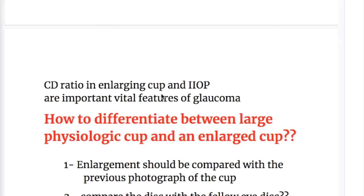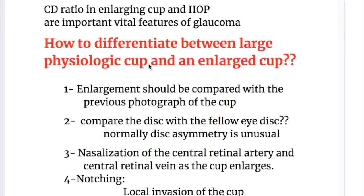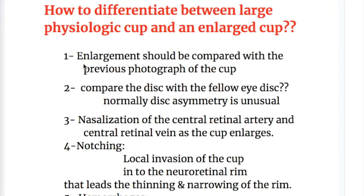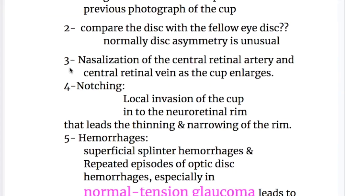CD ratio in an enlarging cup and increased intraocular pressure are important vital features of glaucoma. How to differentiate between a large physiologic cup and an enlarged cup? Number one, enlargement should be compared with previous photographs of the cup if available. Number two, compare the disc with the fellow eye disc — normally, disc asymmetry is unusual. Number three, nasalization of the central retinal artery and central retinal vein as the cup enlarges.